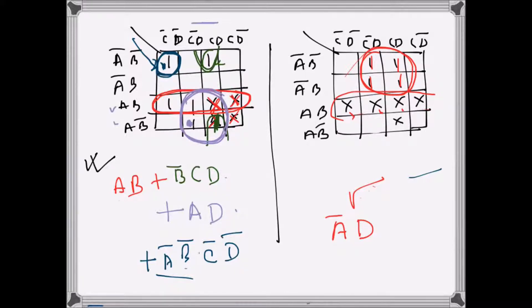So there may be a temptation to make them one because I can see there is a group, but we don't do that. We shouldn't do that because we will end up having an unnecessary extra term. So yeah, that's what I was trying to say. We have to take all the ones at least once and that's it.